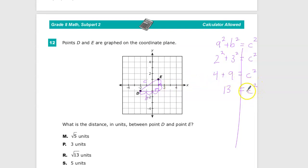So I'm going to get rid of this square by square rooting it. By taking the square root, you obviously don't square root it. So you end up with C is equal to square root of 13. So the answer to number 12 is R. That's how that whole thing works.